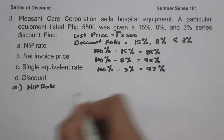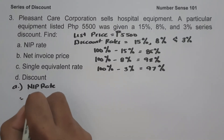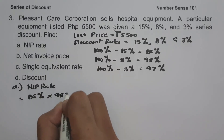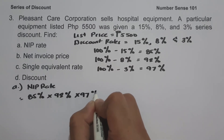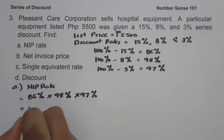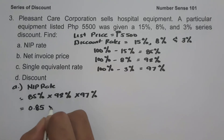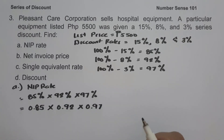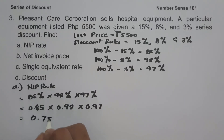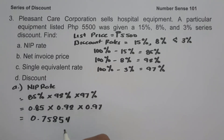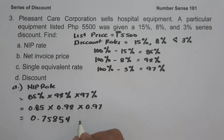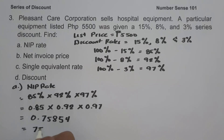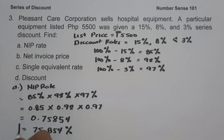To determine the NIP rate, we multiply 85% times 92% times 97%, or 0.85 times 0.92 times 0.97, which gives us 0.75854, or 75.854% in percentage. This will be our NIP rate.